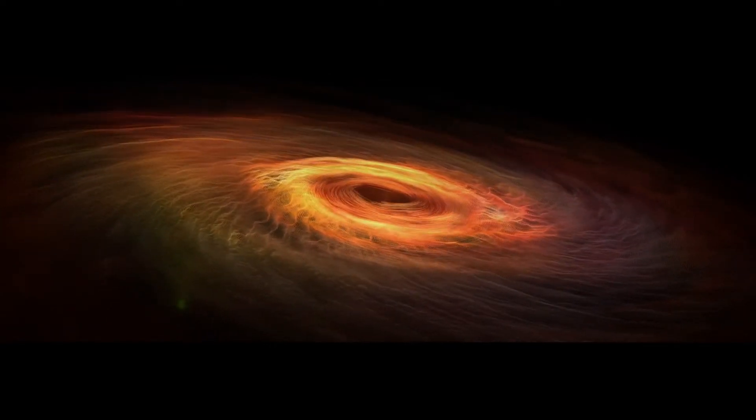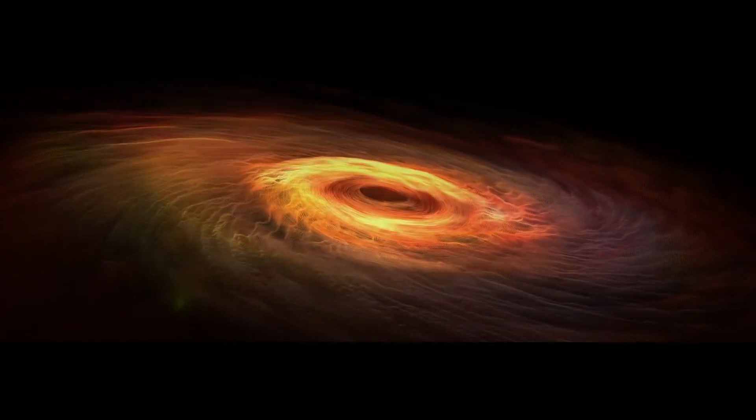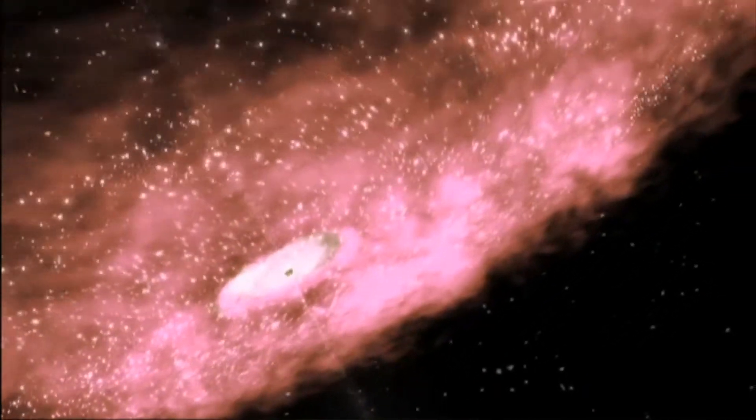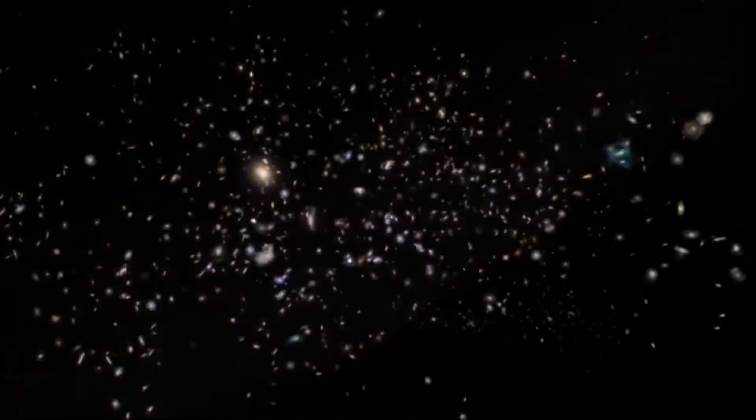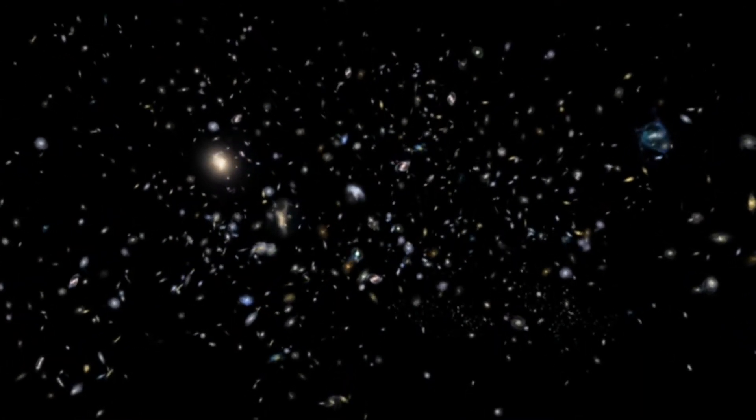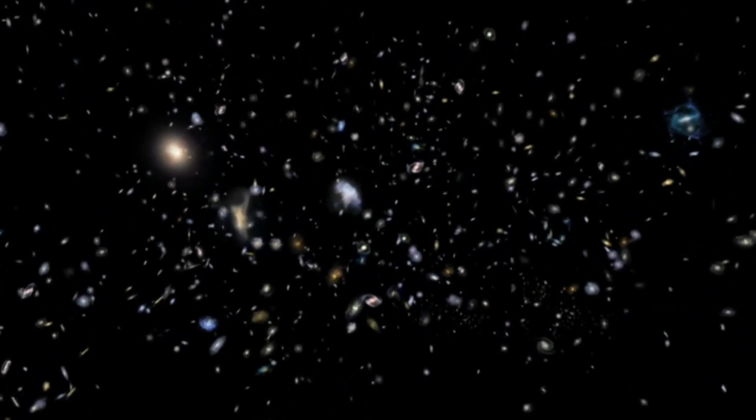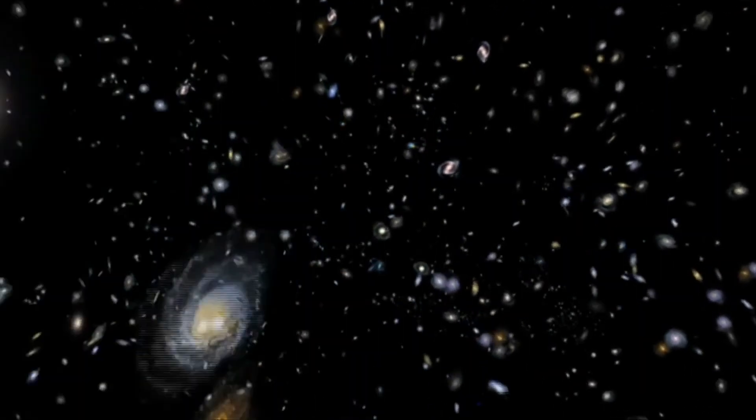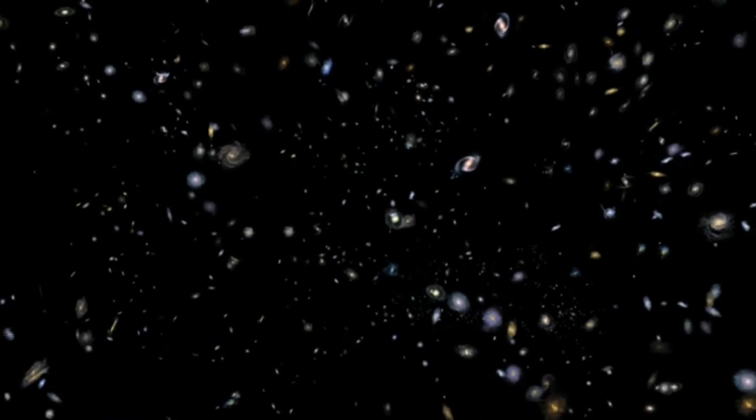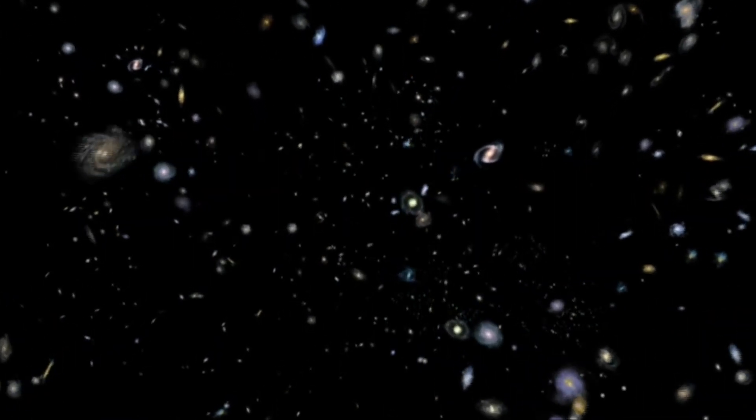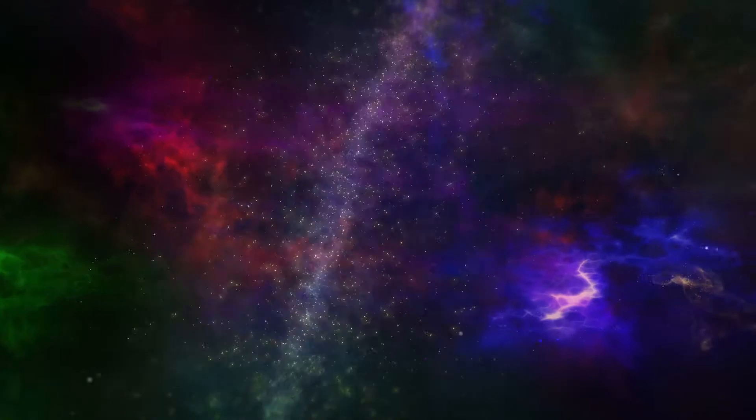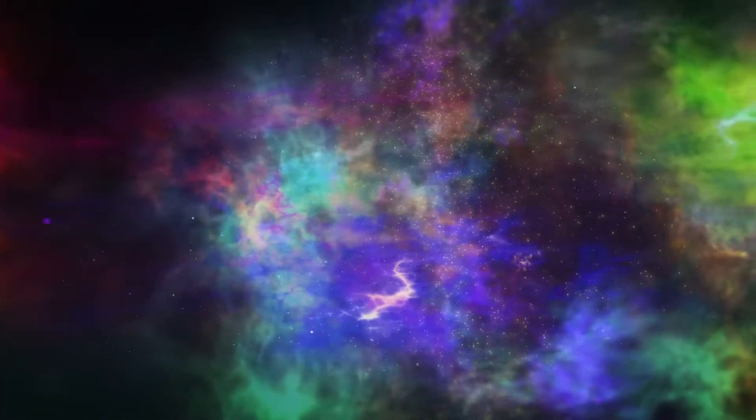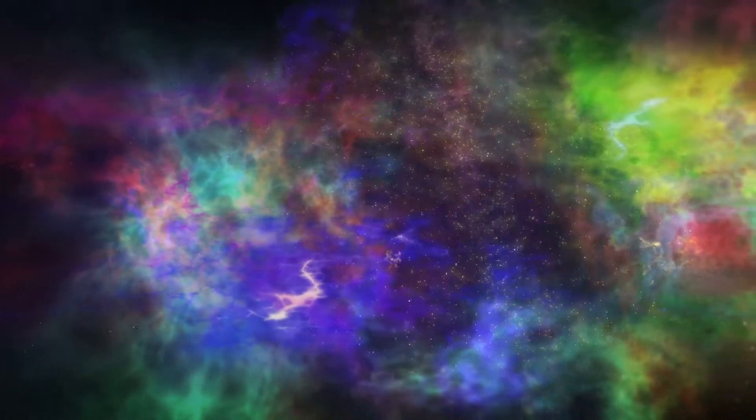The strongest evidence for intermediate black holes comes from a few low luminosity active galactic nuclei. Due to their activity, these galaxies almost certainly contain accreting black holes, and in some cases the black hole masses can be estimated using the technique of reverberation mapping. For instance, the spiral galaxy NGC 4395 seems to contain a black hole with mass of about 400 solar masses.